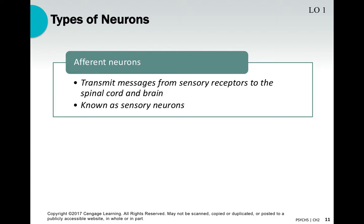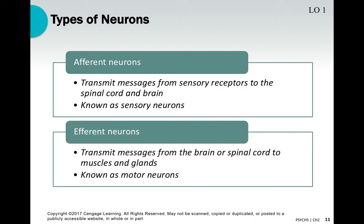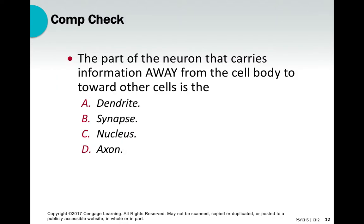Broadly speaking, there are two types of neurons. Afferent neurons, also called sensory neurons, transmit messages from sensory receptors like your eyes, ears, and skin to the spinal cord and brain. Conversely, efferent neurons, also called motor neurons, relay messages from the brain and spinal cord back to our muscles and glands. These two types work together simultaneously.